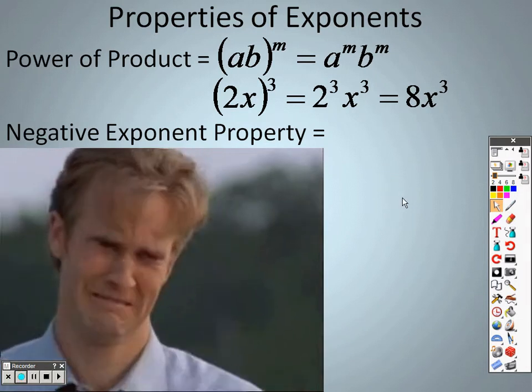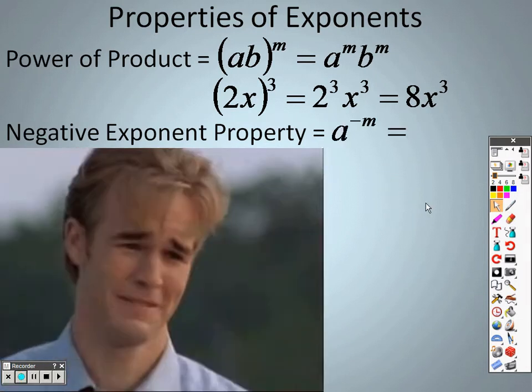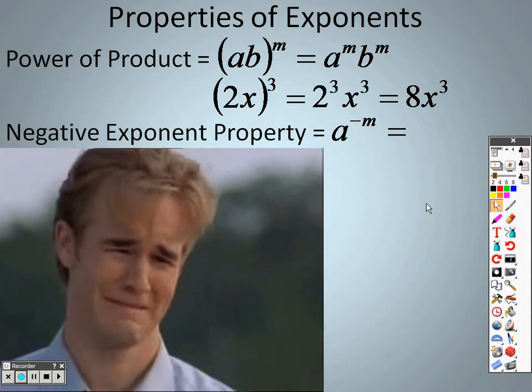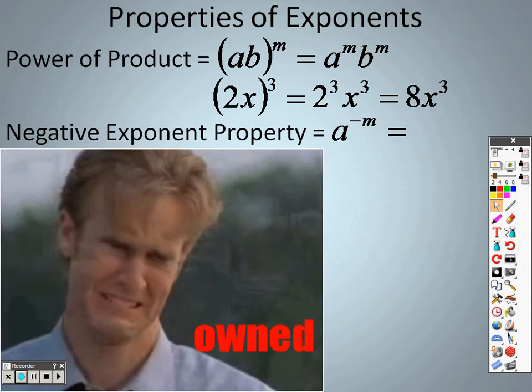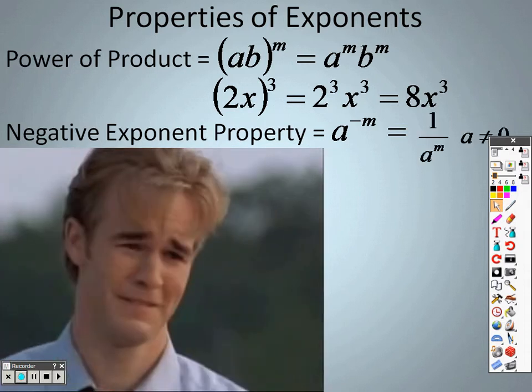Next is the negative exponent property. And basically what that is saying is that you can have a negative exponent. We're not allowed. So if you have a negative exponent, you want to move it respectively.